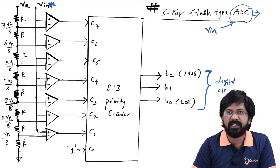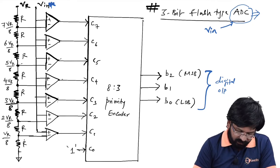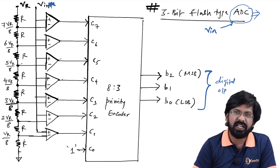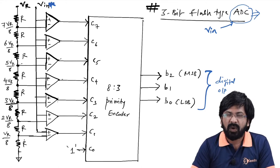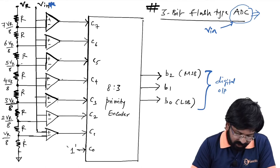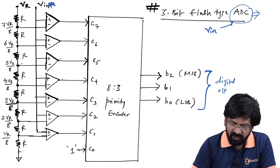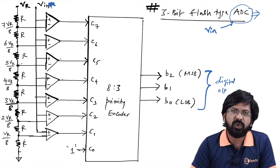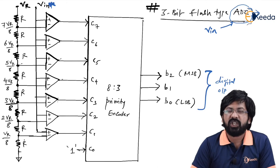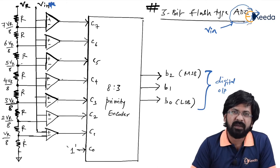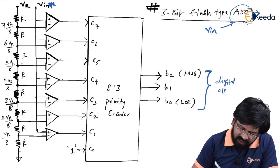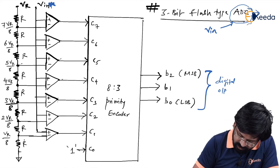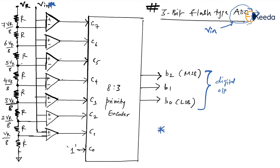There are 7 comparators and 8 resistors. The relation for an n-bit ADC is: you require 2 raised to n resistors, and 2 raised to n minus 1 comparators. Since n equals 3, the number of resistors is 2 to the power 3, which is 8.